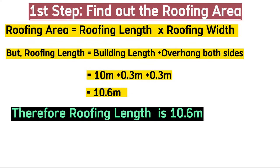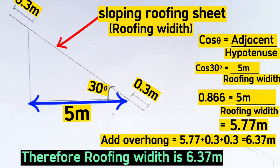The first step is to find the roofing area. We get the roofing length by adding building length plus overhang on both sides: 10 m + 0.3 m + 0.3 m = 10.6 m. We get the roofing width using Pythagoras theorem and trigonometry: cos(30°) = 5 ÷ roofing width, which gives us a roofing width of 5.77 m.